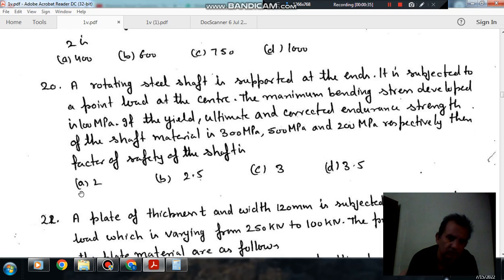Then factor of safety of the shaft is: option A, 2; option B, 2.5; option C, 3; and option D, 3.5.